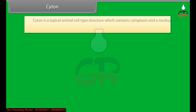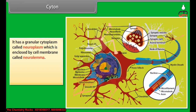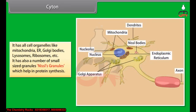Cytone is a typical animal cell-type structure which contains cytoplasm and a nucleus. It is spherical in shape and about 4 to 135 micrometers. It has a granular cytoplasm called neuroplasm, which is enclosed by a cell membrane called neurolemma. It also has a large spherical and centric nucleus. It has all cell organelles like mitochondria, ER, Golgi bodies, lysosomes, ribosomes, etc. It also has a number of small-sized granules called Nissl's granules, which help in protein synthesis.